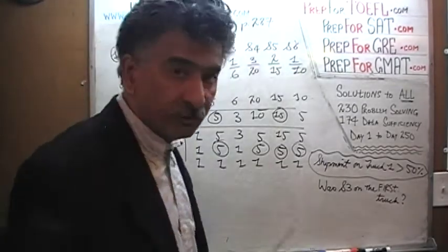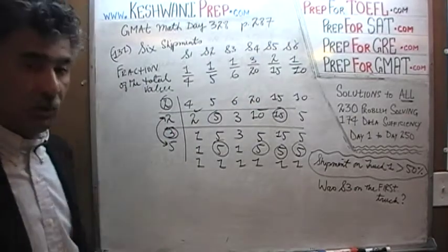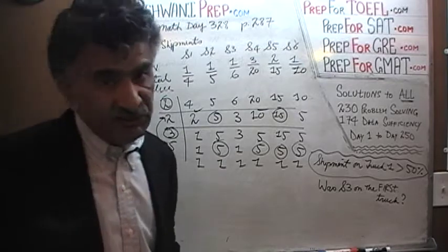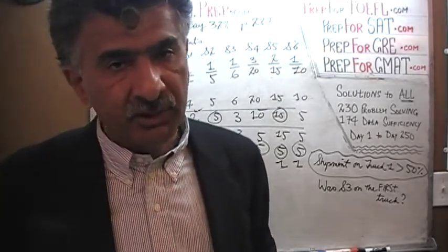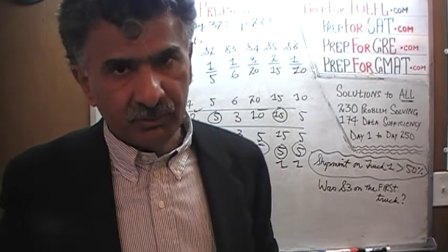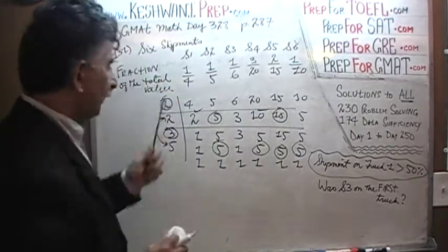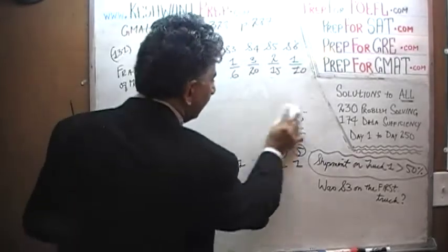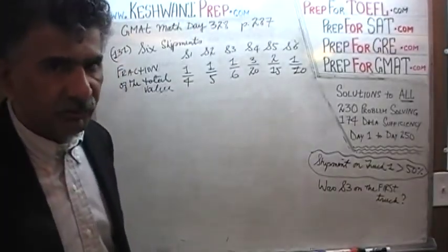Of course, you don't have to do all of this if you can see right away by visual inspection that 60 is the number. If you thought of 120 or 180 or 6 billion, those would do the job as well, but 60 is the smallest. Let's pretend that the total value of all the shipments is $60.